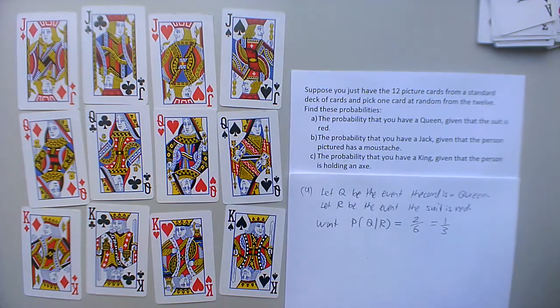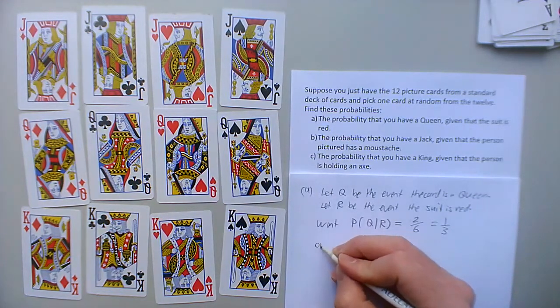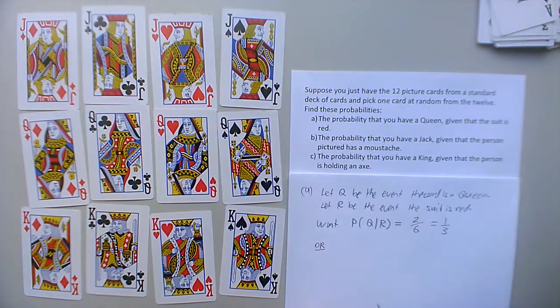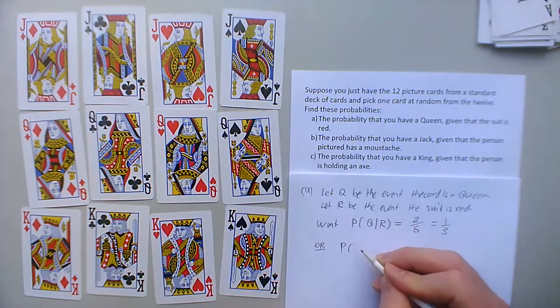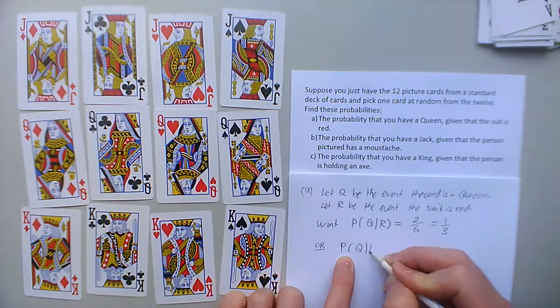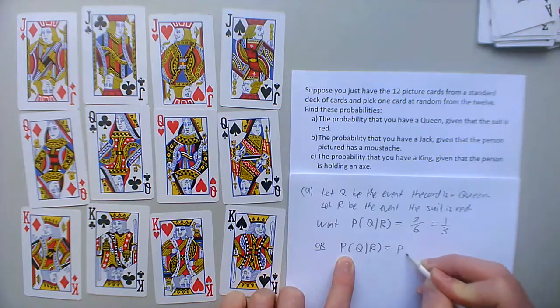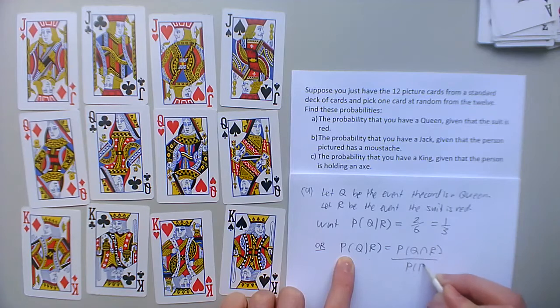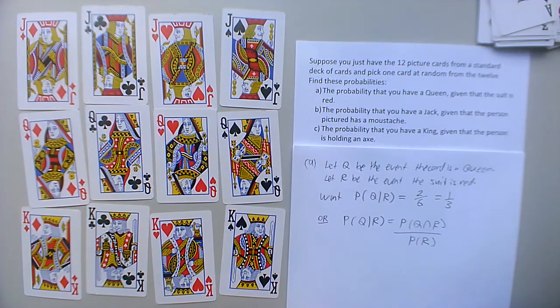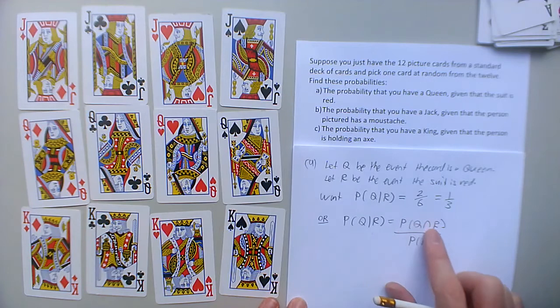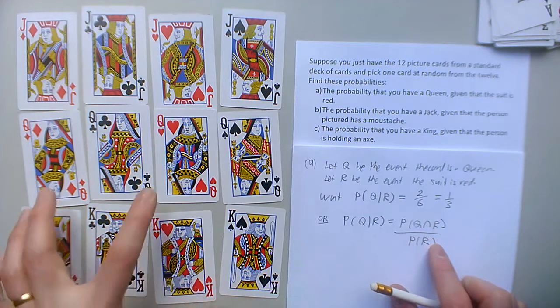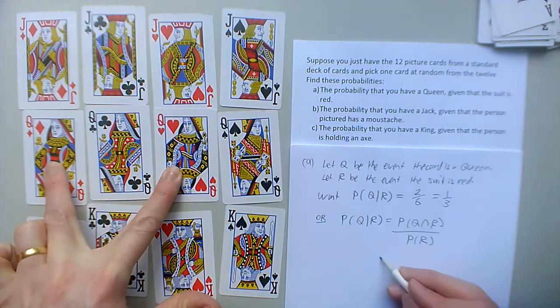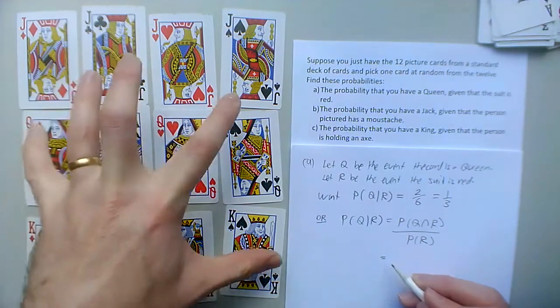There's actually a formula for this too and I really want to do the formula too just to make sure that everything's working the way I expect it to. So an alternative method is to use the formula. So the probability of Q given R is the probability of Q intersection R divided by the probability of R. So let's see, Q intersection R is queen and red at the same time. That's these two, and there's two out of the 12 cards are these two, so that's one sixth, two out of twelve.